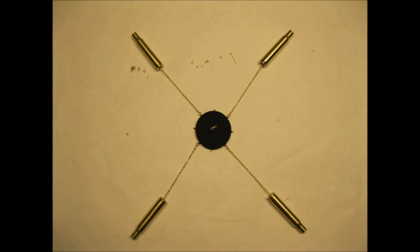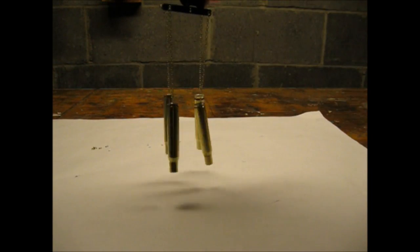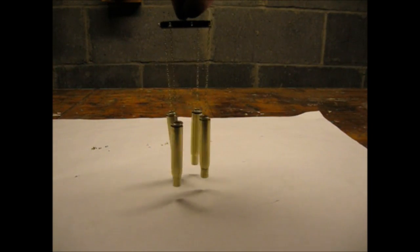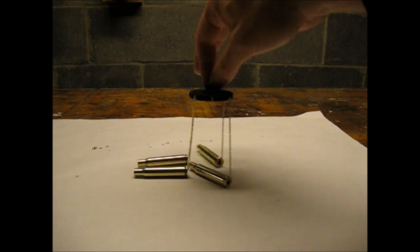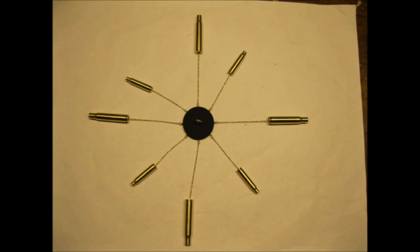I attached the four 30-06 shells evenly spaced around the disc. I was happy with how balanced they hung. Then I repeated the process with the 223 shells. I experimented with different chain lengths until I was happy with the appearance and the sound.